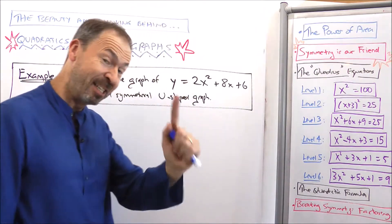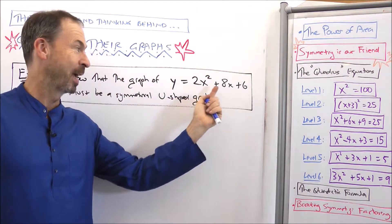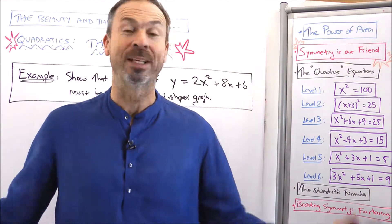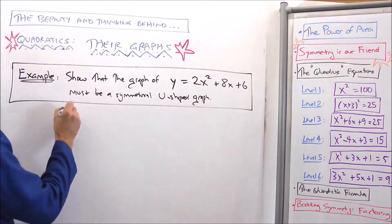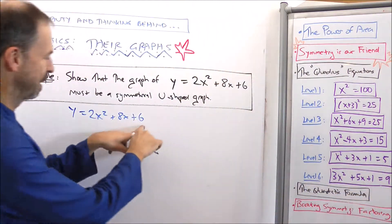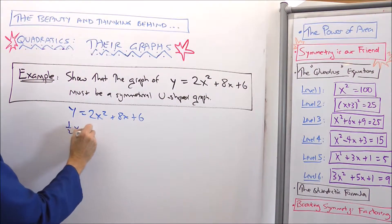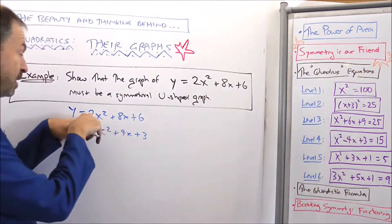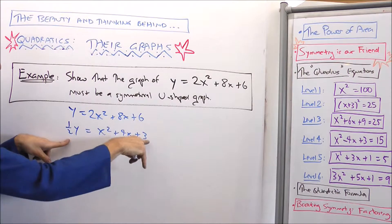Let's go up a slight notch in difficulty and put a number in front of the x squared term. Let's show that the graph of y equals 2x squared plus 8x plus 6 is another symmetrical u-shaped graph using the quadrous method. I notice all these numbers are even, so I'll divide everything by 2: one half of y equals x squared plus 4x plus 3. Dividing by 2 seems simpler right now — it looks like there'll be friendly numbers.